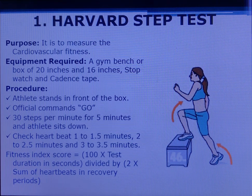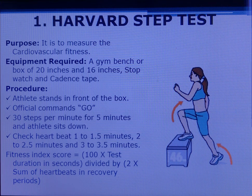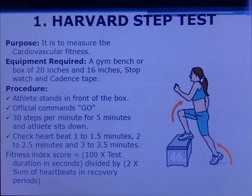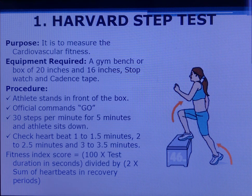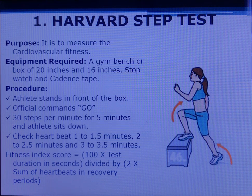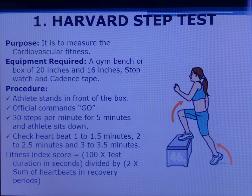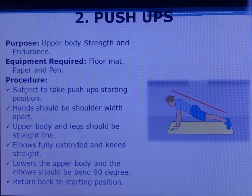After the exercise, the athlete sits down and the heartbeat is checked three times: from one to one-and-a-half minutes, two to two-and-a-half minutes, and three to three-and-a-half minutes. The fitness index score formula is: 100 multiplied by test duration in seconds, divided by two multiplied by the sum of heartbeats in the recovery periods. The example score is given in the textbook. This test is very important for finding out cardiovascular endurance.